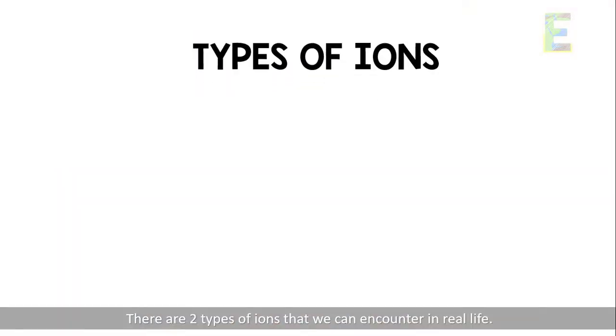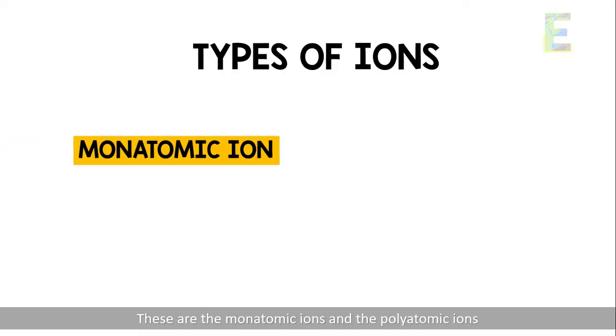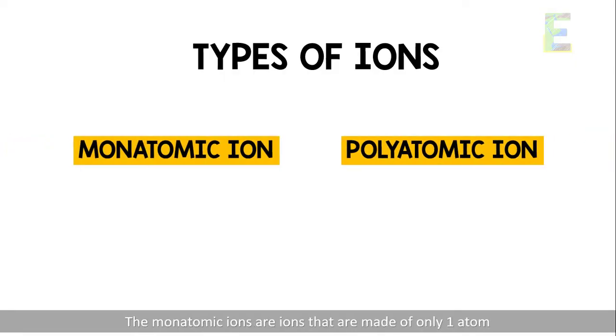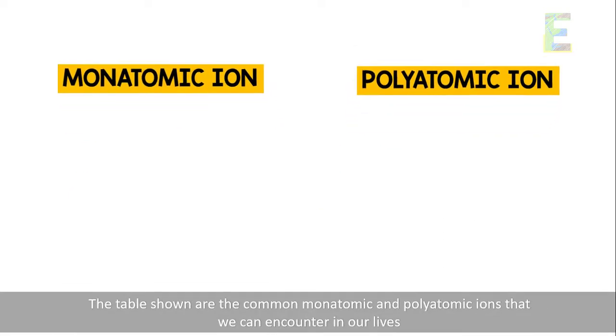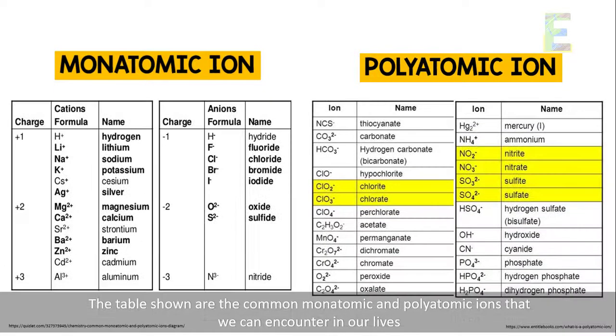There are two types of ions that we can encounter in real life. These are the monatomic ions and the polyatomic ions. The monatomic ions are ions that are made up of only one atom while the polyatomic ions are electrically charged ions that are made up of two or more atoms. The tables shown are the common monatomic and polyatomic ions that we can encounter in our lives.